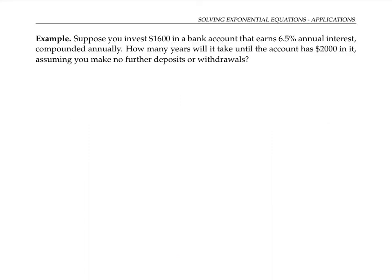In this first example, let's suppose we invest $1,600 in a bank account that earns 6.5% annual interest, compounded once a year. How many years will it take until the account has $2,000 in it, if you don't make any further deposits or withdrawals? Since our money is earning 6.5% interest each year, that means every year the money gets multiplied by 1.065. So after t years, my $1,600 gets multiplied by 1.065 to the t power.